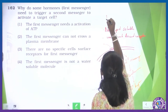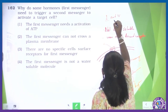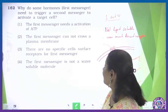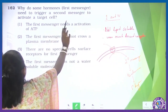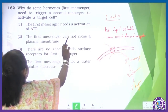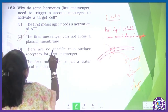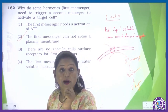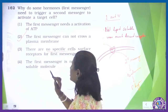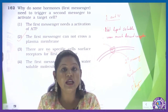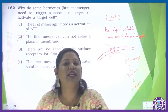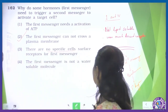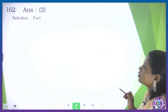This is done by class 1 and class 4 hormones — hypothalamic hormones, pituitary hormones, and adrenaline/noradrenaline hormones. Looking at the statements: 'the first messenger needs activation of ATP' — not correct. 'The first messenger cannot cross the plasma membrane' — this is the correct statement. 'There are no specific cell surface receptors for the first messenger' — no, there are specific membrane-bound receptors. 'The first messenger is not a water-soluble molecule' — also incorrect, it is water soluble. So the correct answer for question 162 is option 2.